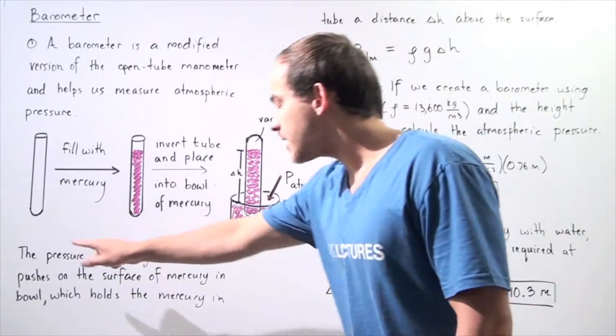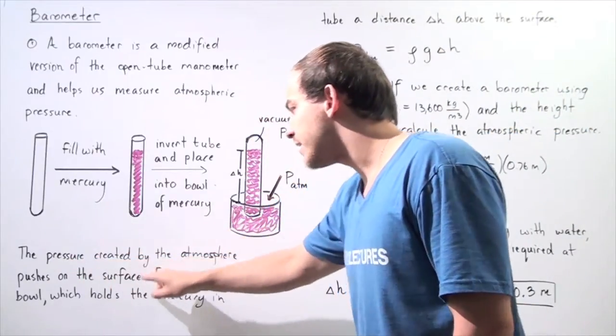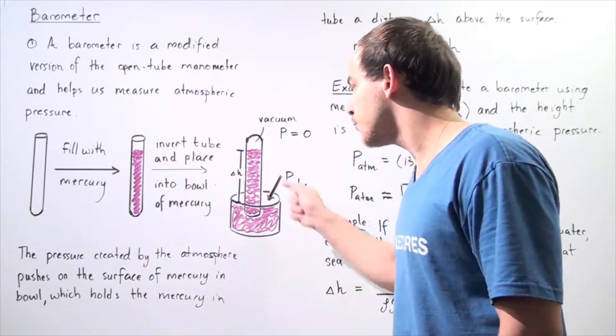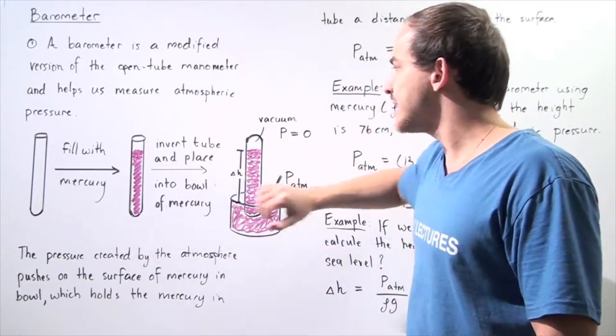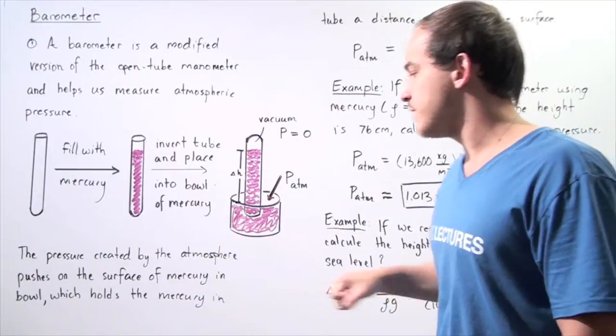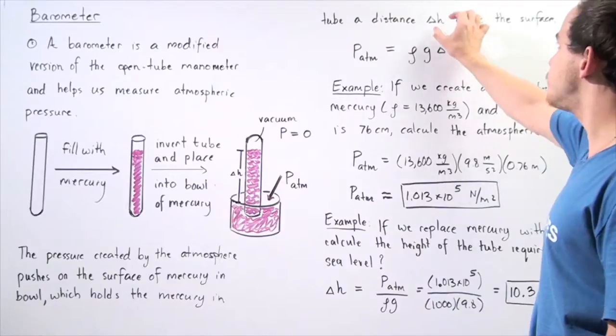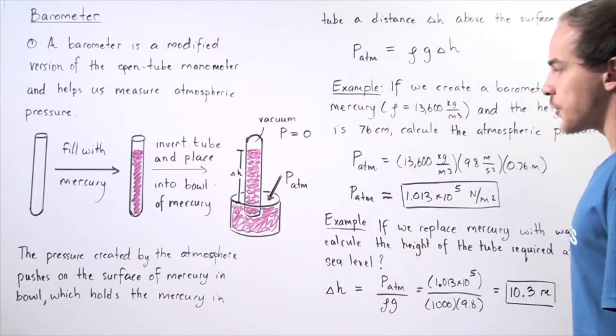Once again, the pressure created by the atmosphere pushes on the surface of the mercury in the bowl because the surface is exposed to the atmosphere which holds the mercury in the tube a certain distance change in H above the surface.